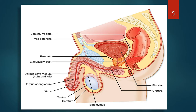Before meeting the urethra there is your ejaculatory duct. This is the sagittal view of the penis. We have your corpus cavernosum — right and left — and below would be your corpus spongiosum. This is the glans of the penis.